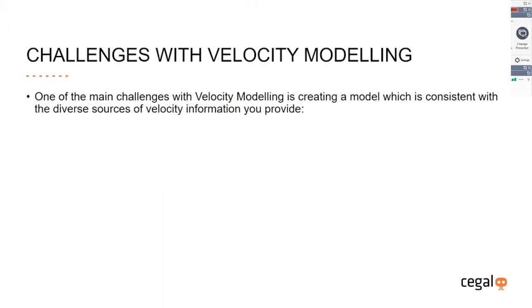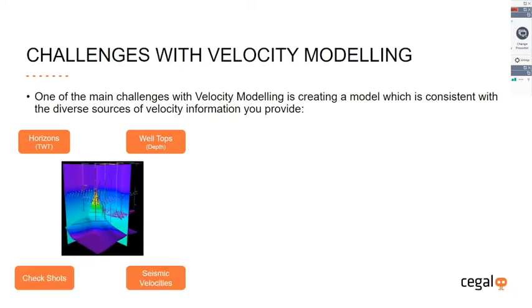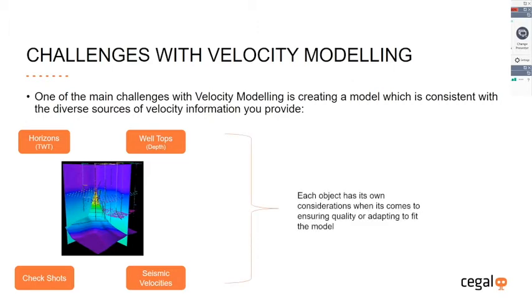To set the scene, one of the main challenges of velocity modeling is creating a model consistent with diverse sources of information about velocities, time, and depth. Typically you start with horizons in time and well tops in depth, then expand to include check shots and seismic velocities — each object has its own quality considerations to ensure it contributes positively to the model.